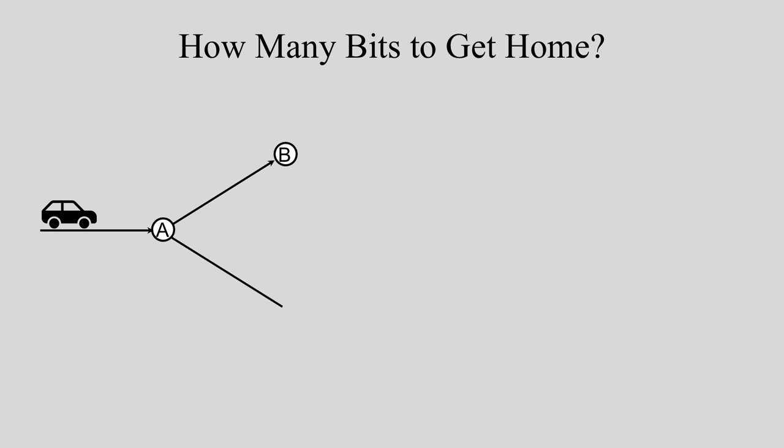An important fact that underpins information theory is that one bit allows you to choose between two equally probable alternatives. To explore this idea, imagine you get lost on your way home and arrive at a fork in the road marked as A here. If you have no prior information about which road to choose, then the fork at A represents two equally probable alternatives. If I tell you to go left, then you have received one bit of information.